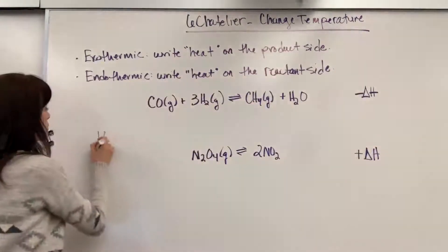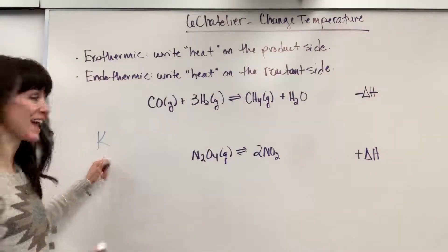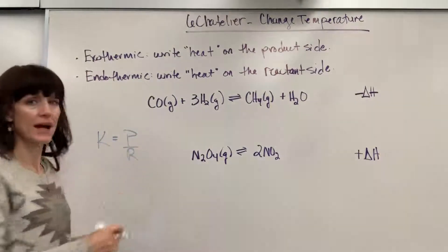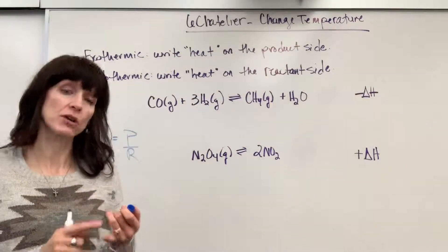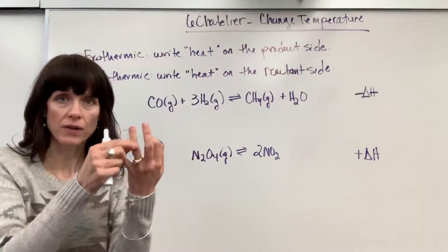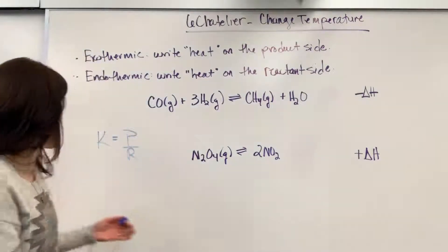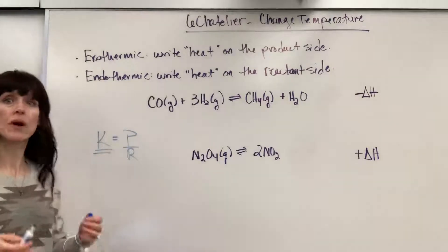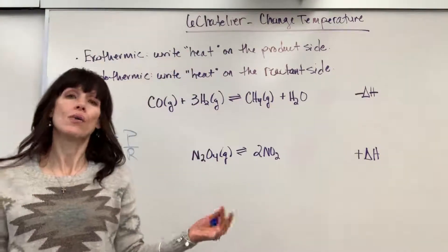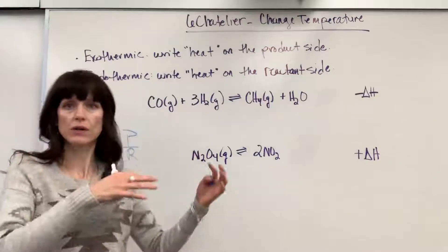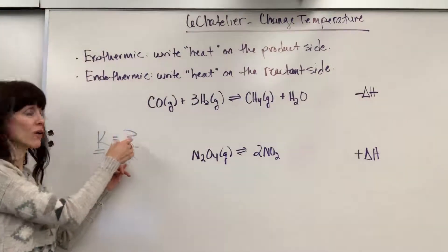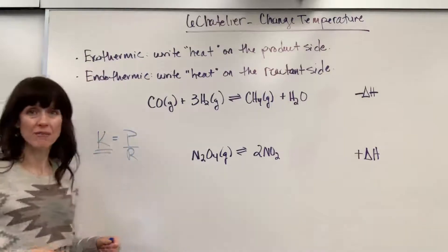You'll recall that our equilibrium constant K is products over reactants. Now, if we change concentration, pressure, or volume, the value of K — the actual number — always stays the same. The system, by Le Chatelier's principle, will always adjust. It will shift forward or reverse to maintain the ratio of reactants to products to keep that value.